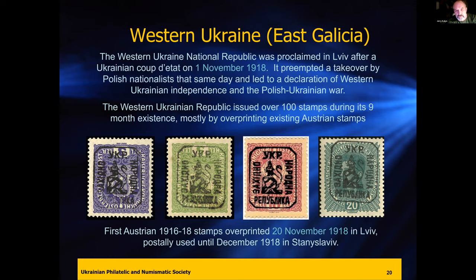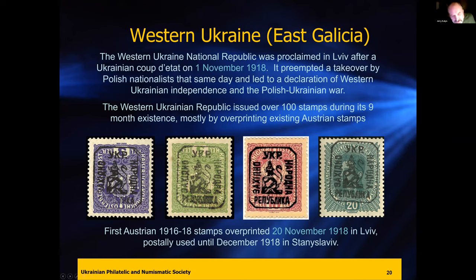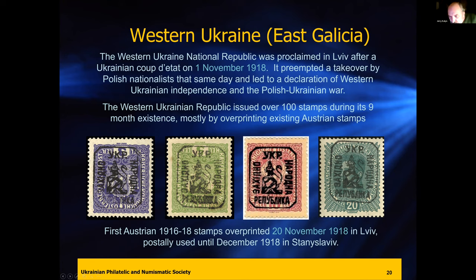During the fighting for control of Lviv, the Western Ukrainian Republic issued over 100 stamps — all pretty well printed or overprinted Austrian stamps, which were readily available in stock. The first overprints featured the lion, the traditional symbol of Lviv, because it was founded by King Lev in medieval times. These are fairly rare but also forged. To identify forgeries, you look for two specific breaks in the left frame of the lion design — the fake has no break. You also check for a break between the tail and the body of the lion.